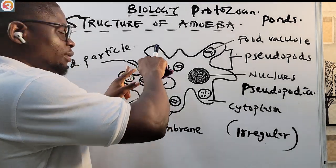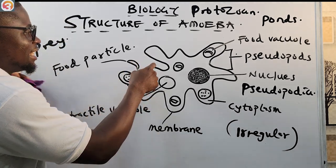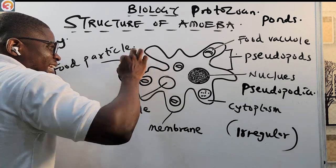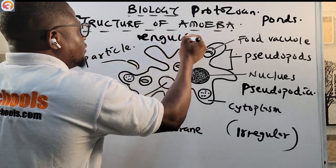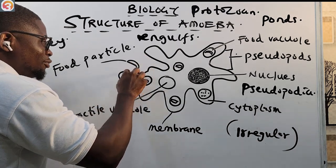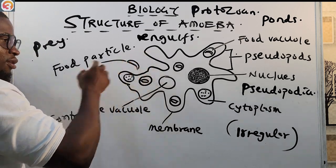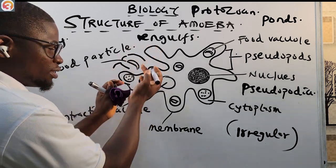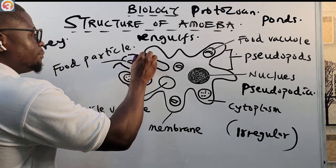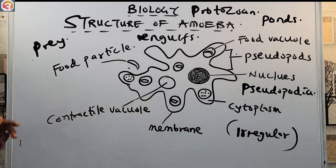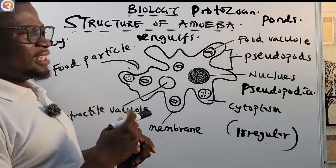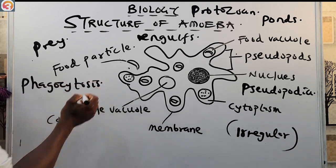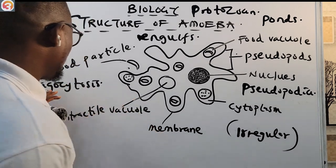Once the amoeba gets close to a food particle, its pseudopods close around it and engulf it. The two sides draw closer and closer until the amoeba completely engulfs the food particle. This process by which the amoeba engulfs its prey or food particles is called phagocytosis.